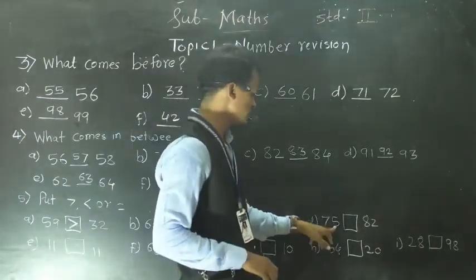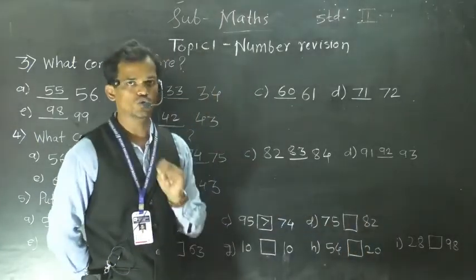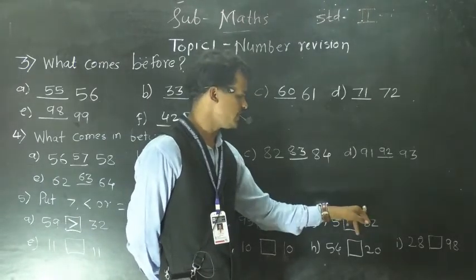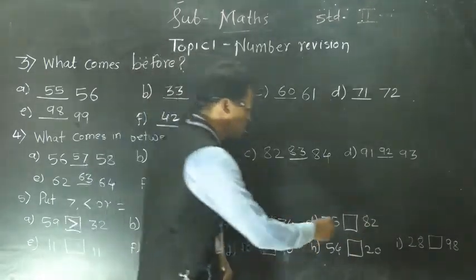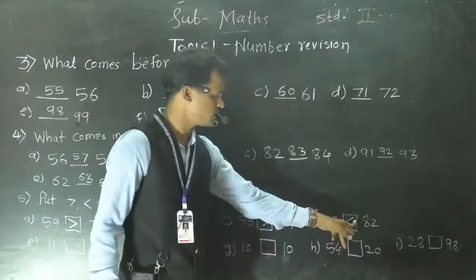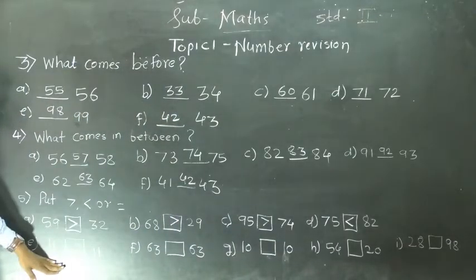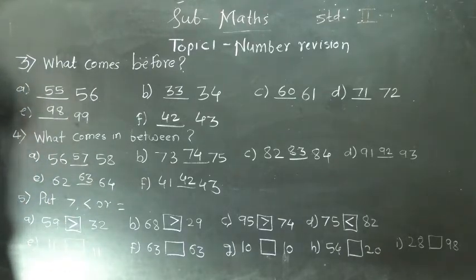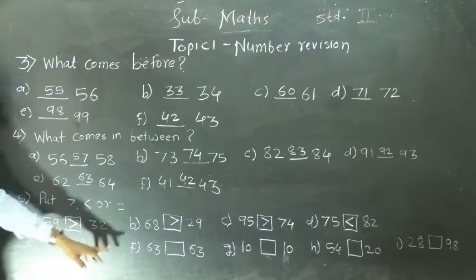Next: 75 and 82. Compare the tens place digit — because these are two-digit numbers. Here 7, here 8. So 8 is greater than 7, so 82 is greater than 75. So use this sign — means the open side of this sign should be at 82. Next number: here 11 and another side also 11. So these both numbers look like the same. Values of these two numbers are same, so we will use the equal to sign — means 11 is equal to 11.